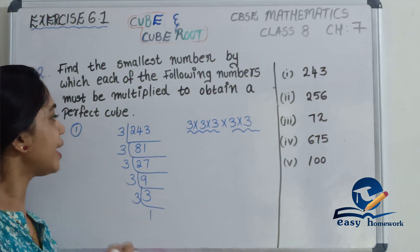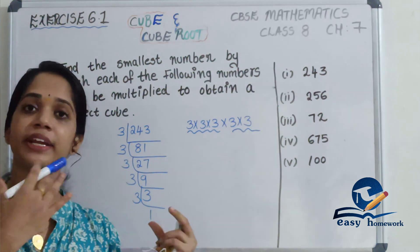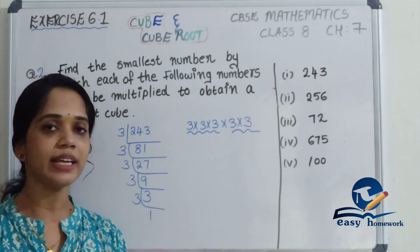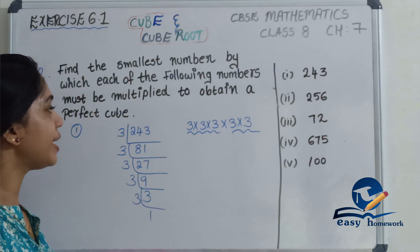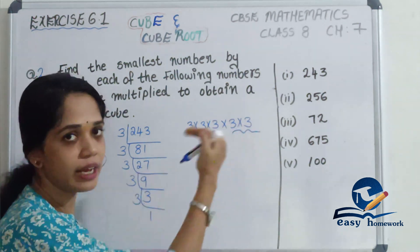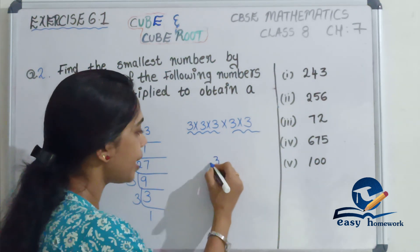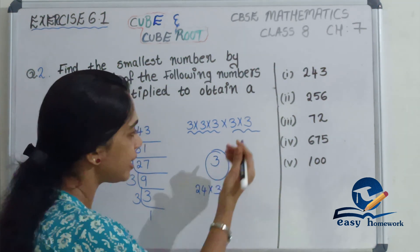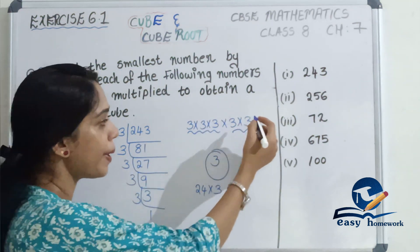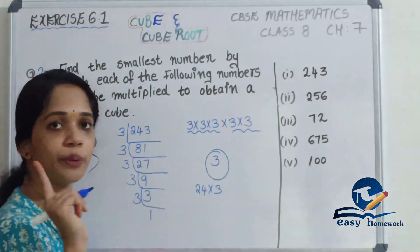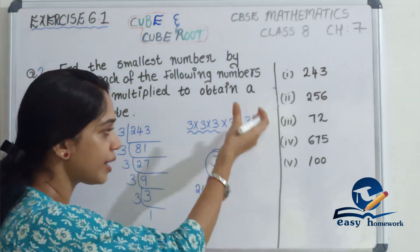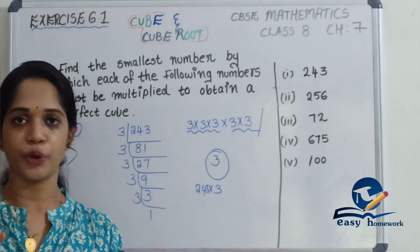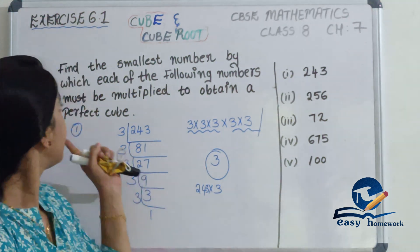Next, we have to find the least number to multiply to get a perfect cube. We have to multiply 243 by 3. If we multiply it by 3, we get a perfect cube. So the least number to multiply is 3.